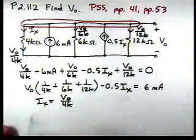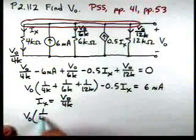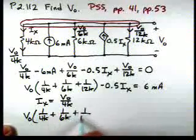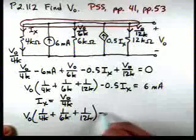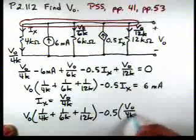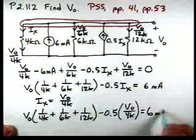So now if we substitute that in, we'll have V0 times 1 over 4K plus 1 over 6K plus 1 over 12K minus 0.5 times V0 over 4K equal to 6 milliamps.